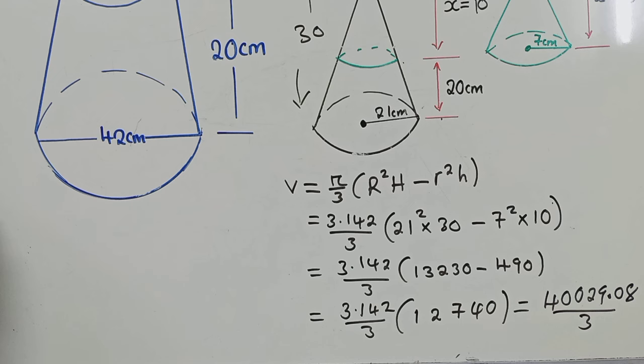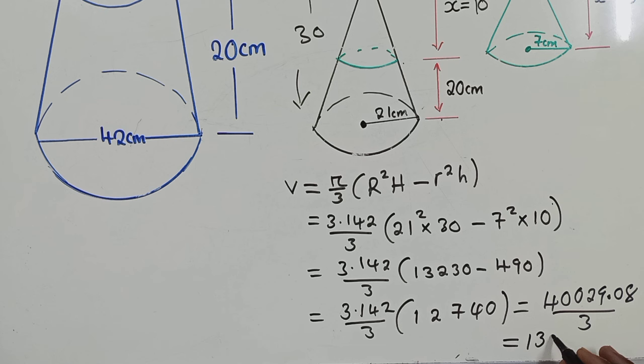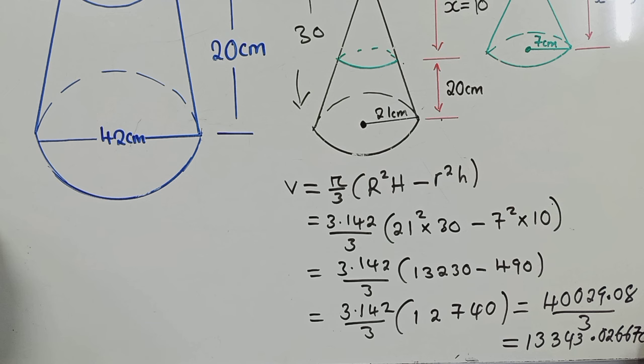The next thing will just be to multiply 3.142 multiplied by what is inside the bracket. We're getting 40,029.08 divide by 3. So when you divide by 3, your final answer will be 13,343.0267 centimeter cubed.